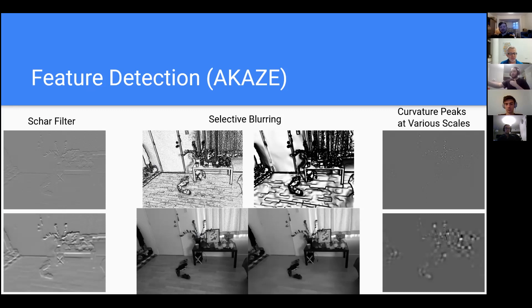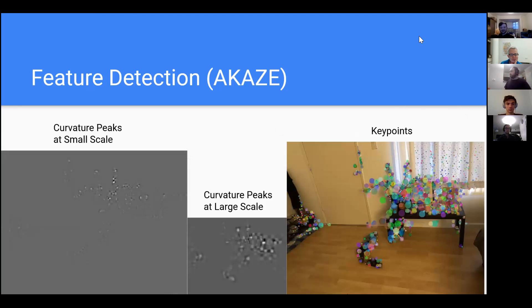And so what we end up with is on the right, these key points detected. This is a visualization of the key points and their size, roughly. So this will show you what scale have we detected these key points at. And as you can see, it's found, for instance, on the curtains, it finds lots of really tiny features. And on the shoes, the objects on the table, those are much larger features. And so this is the kind of information we want to extract.